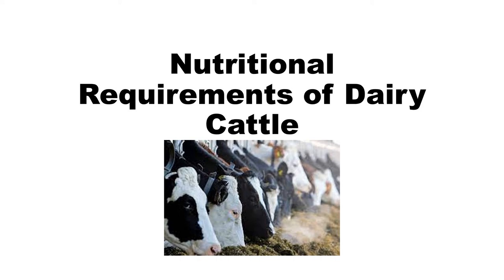In the last video lecture on dairy animal production, I talked about the selection and culling of dairy animals, and then introduced the new chapter on the digestive system of dairy animals. The digestive system of dairy animals is the same as that of ruminants — goats, sheep, and cattle. Both dairy cattle and beef-type goats are all considered ruminants.